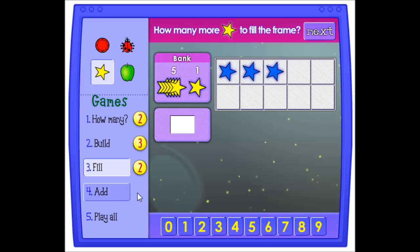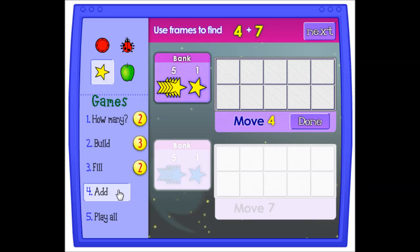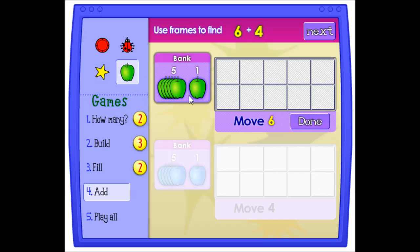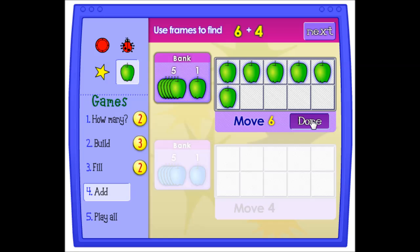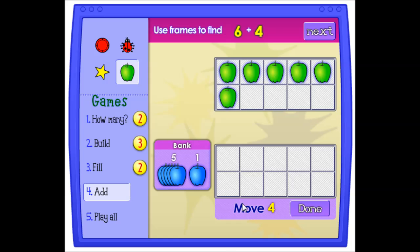How many more stars to fill the frame? You can add two sets of numbers. Use frames to find four plus seven. Use frames to find six plus four. So you fill in six up top, ten, and four at the bottom.